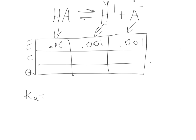Let's say at equilibrium we have 0.1 molar HA, 0.001 molar hydrogen ion, and 0.001 molar conjugate base. In a case like that your KA is going to be 0.001 squared over 0.1 and that comes out to equal 1 times 10 to the minus 5. So there's your KA value.